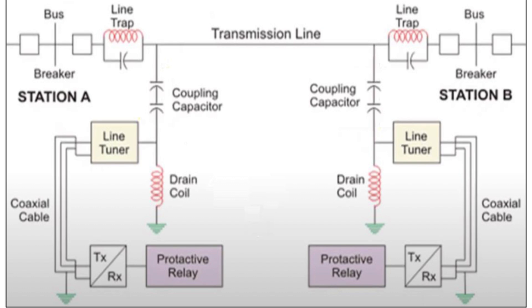The transmitters and receivers handle the sending and receiving of carrier signals. They are typically mounted in a rack or cabinet in the control room, while the line tuner — which matches the transmission line's characteristics — is placed outside in the switch yard. The two are connected by a fiber optic or coaxial cable, which shields the signal from noise and interference.